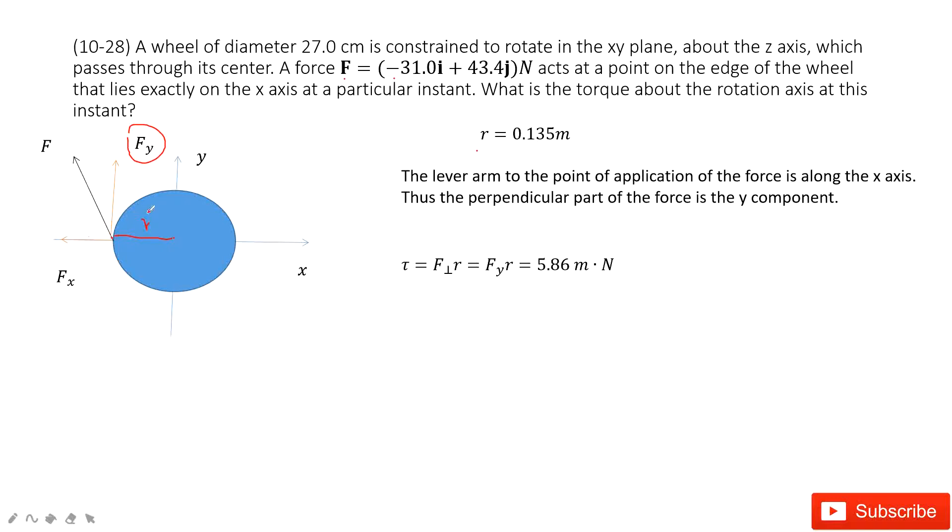And Fx doesn't do anything. So if you want to find the torque, it's F perpendicular, that is Fy times R. See, Fy is given, R is given. Fy is 43.4. So you get the final answer there. Thank you.